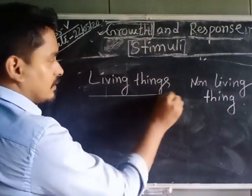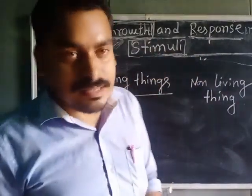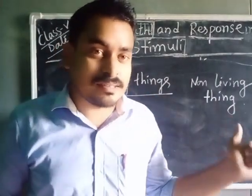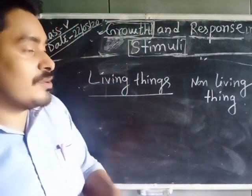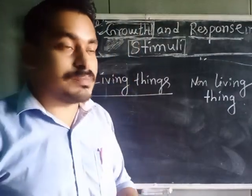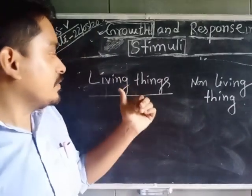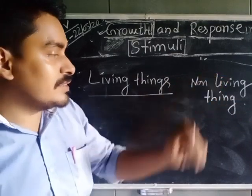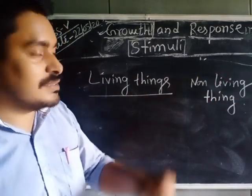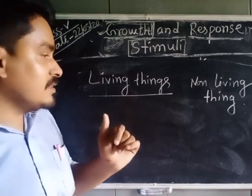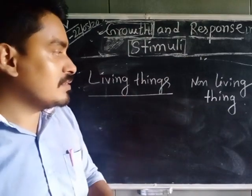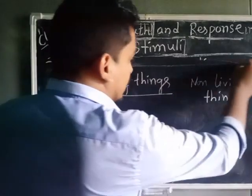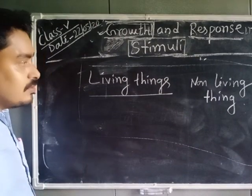So what are living things? Living things are things that have life inside them, and non-living things are things that do not have life inside them. We have already learned that living things grow, non-living things do not grow; living things feel, non-living things do not feel; living things reproduce, non-living things do not reproduce; living things need water and food, non-living things do not. According to this concept we are going to start today's class.